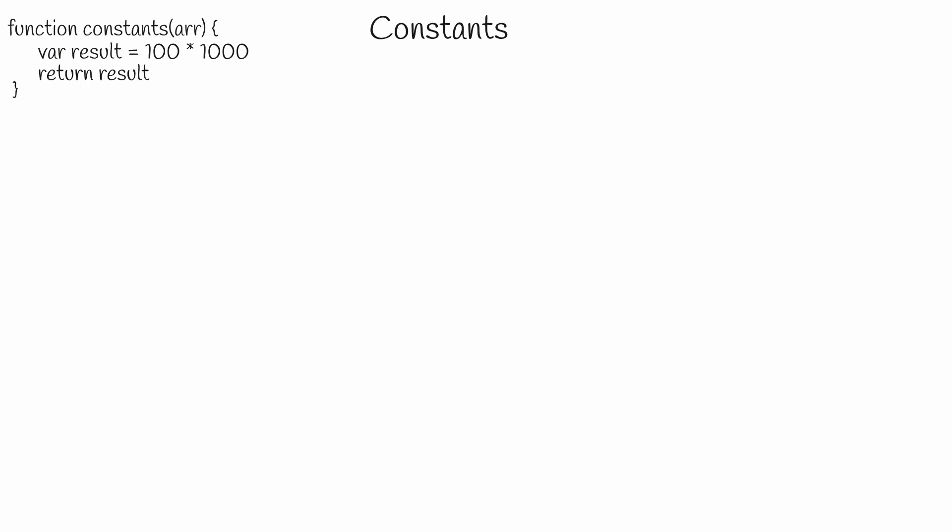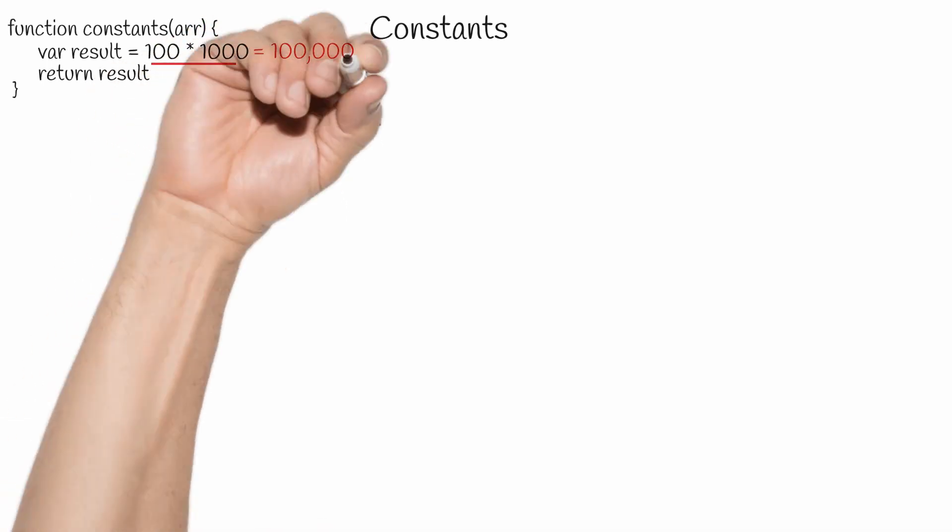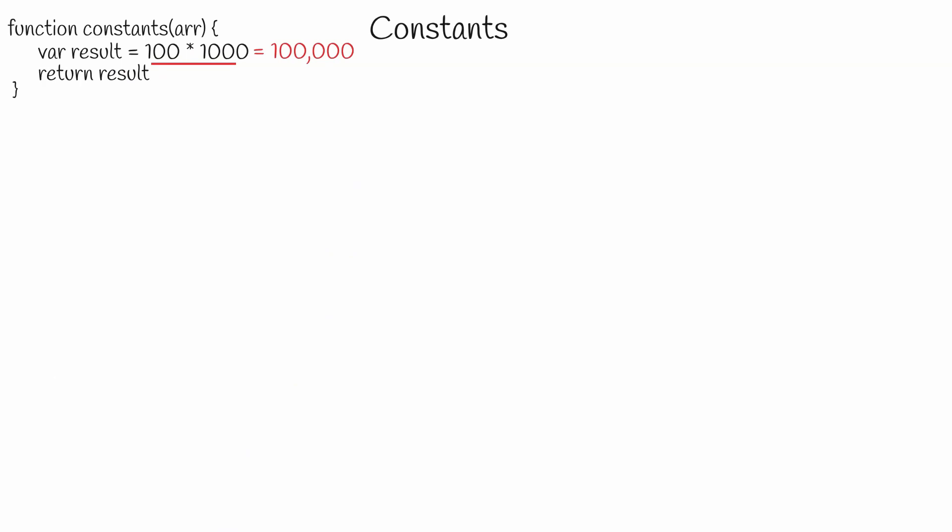A constant is any step that doesn't scale with the input to the function. For example, the time to evaluate this expression does not change with the input because both 100 and 1000 are constants. That is, these values are always the same. This expression always results in the same value, and it always takes the same amount of time or constant time to return the same result.